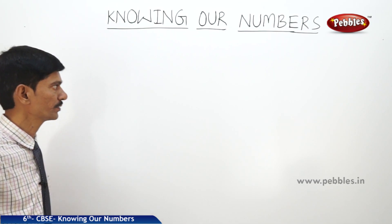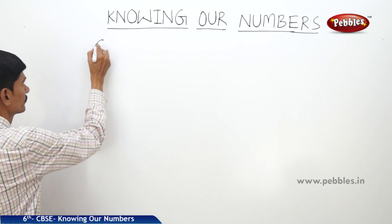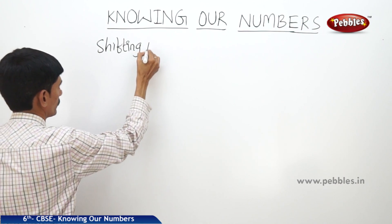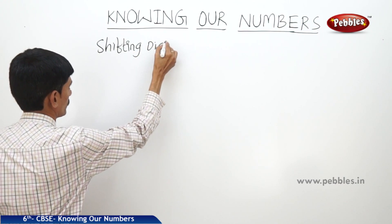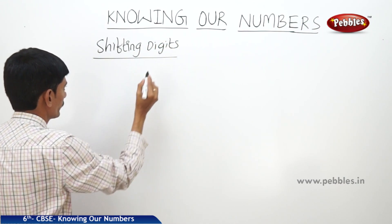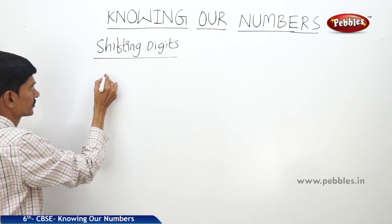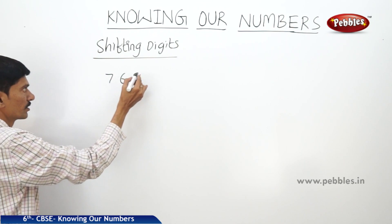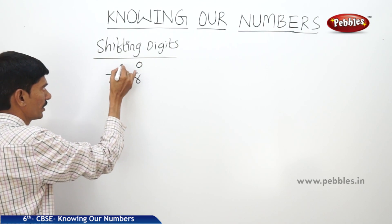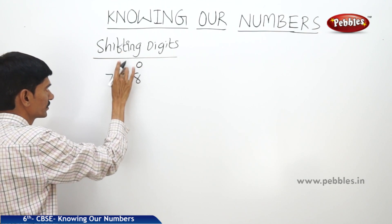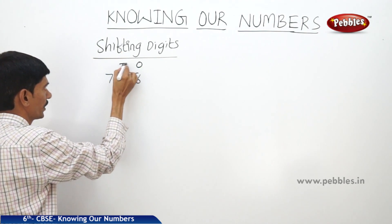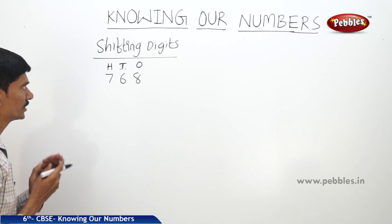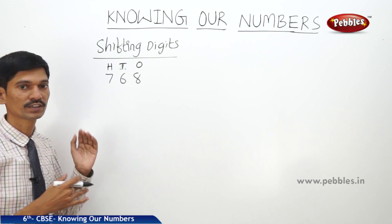Now let us see the next topic: shifting digits. For example, the given number is 768. Here the 1s place is 8, the 10s place is 6, and the 100s place is 7. If you exchange the 1s place and 100s place with each other,